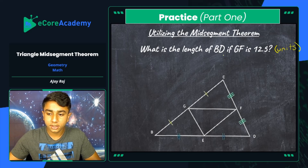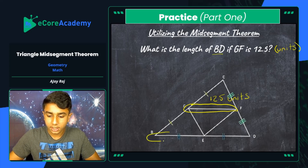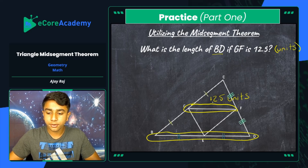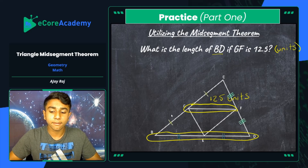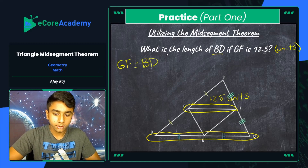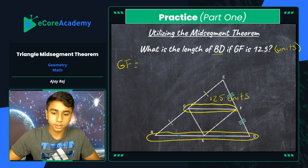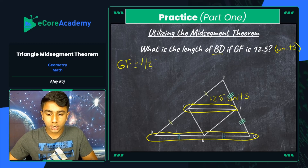If we know GF is 12.5 units — the mid-segment shown here — and we want to figure out the length of BD, we utilize the mid-segment theorem. A mid-segment parallel to the third side is always one half of that side's length. So GF equals one half of BD. That equation can be rewritten: multiplying each side by two gives us 2 × GF = BD. Plugging in 12.5: 2 × 12.5 = BD.